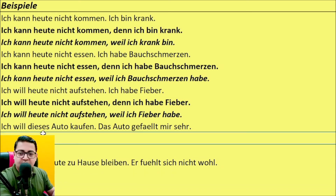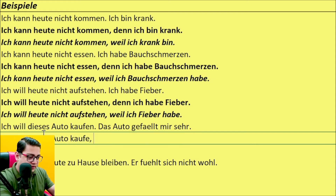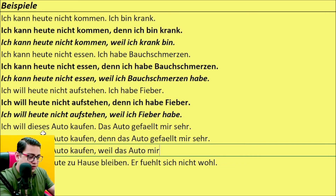Next example: I want to buy this car. I like this car very much. With denn: Ich will dieses Auto kaufen, denn das Auto gefällt mir sehr. With weil: Ich will dieses Auto kaufen, weil das Auto mir sehr gefällt. You see the difference — with weil, the verb 'gefällt' goes to the end of the clause.